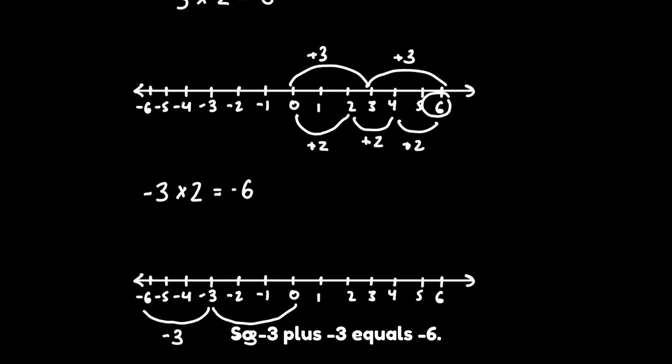So negative 3 plus negative 3 equals negative 6. Notice how the answer is negative and is on the left side of the number line. Maybe you can see where I'm going with this.